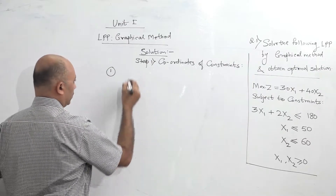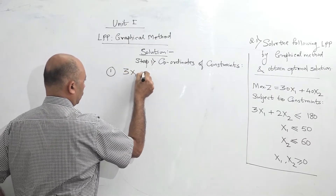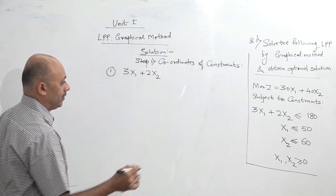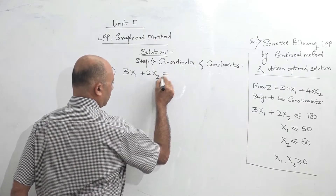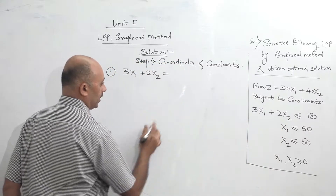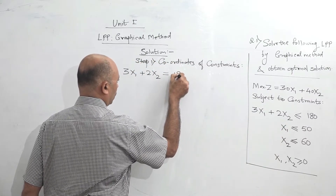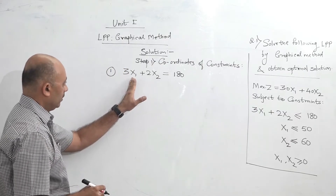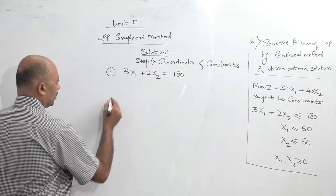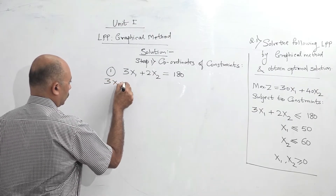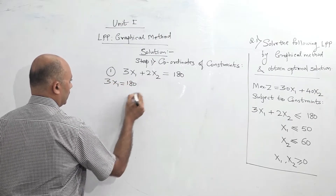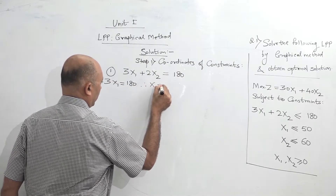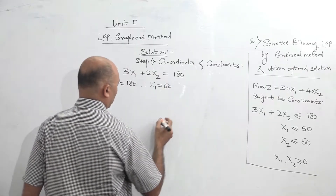The first constraint is 3x1 plus 2x2. When we find coordinates, we assume equality because the constraint is less than or equal to. So we assume 3x1 plus 2x2 is equal to 180. When you want to find values of x1, assume that x2 is 0. So 3x1 will be equal to 180, therefore 180 divided by 3, so the value of x1 will be 60. This will be the first coordinate.